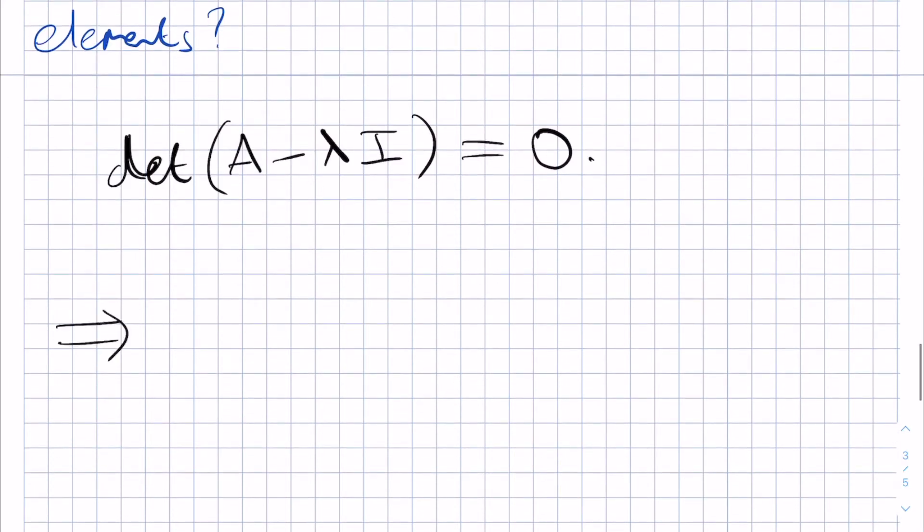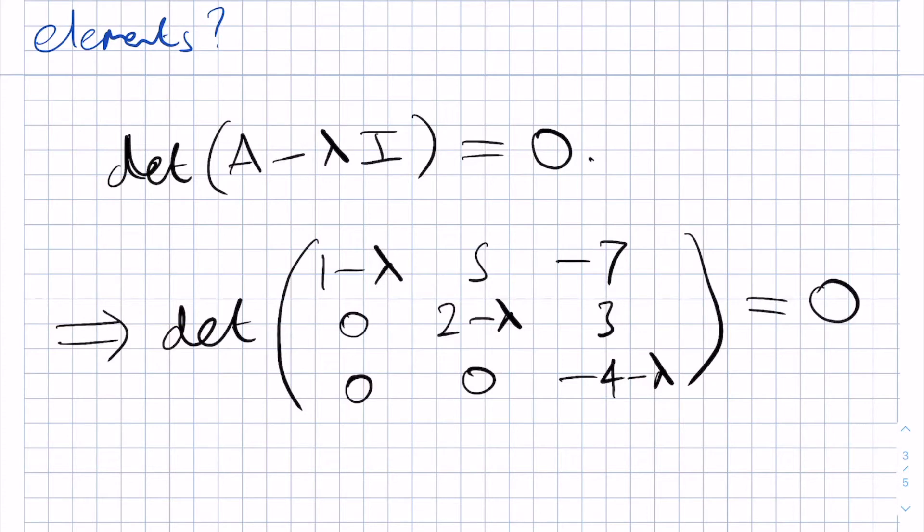Therefore we want to solve det of the matrix 1 minus lambda, 5, minus 7, 0, 2 minus lambda, 3, 0, 0, minus 4 minus lambda is equal to 0.